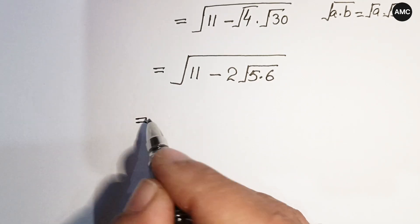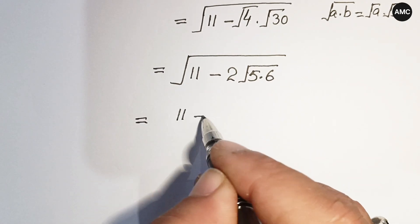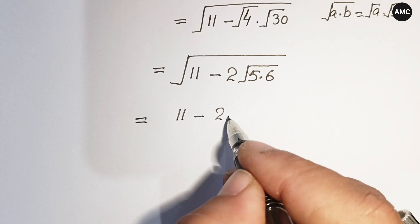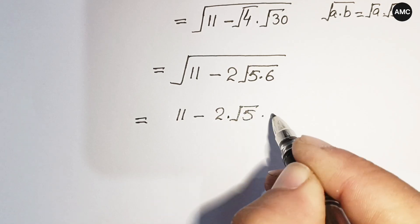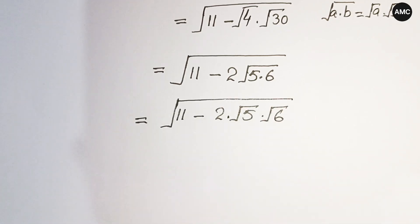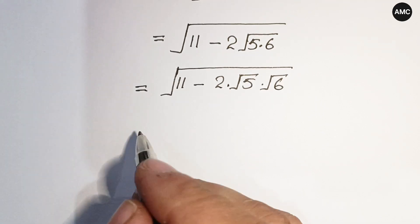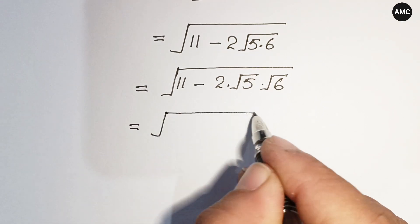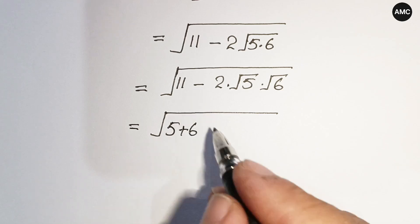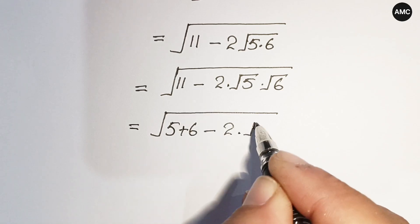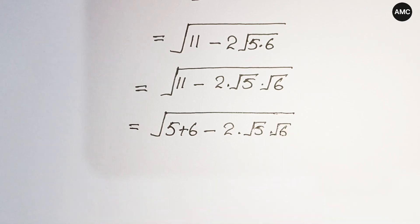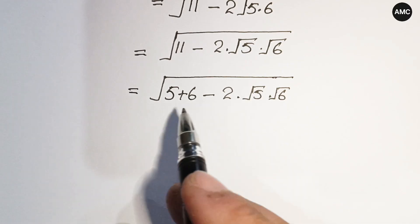Our next step is: the square root of (11 minus 2 times √5 times √6). Now we notice that 11 can also be written as 5 plus 6, which equals 11. So we have the square root of (5 plus 6 minus 2 times √5 times √6). Now we can make this expression a perfect square.